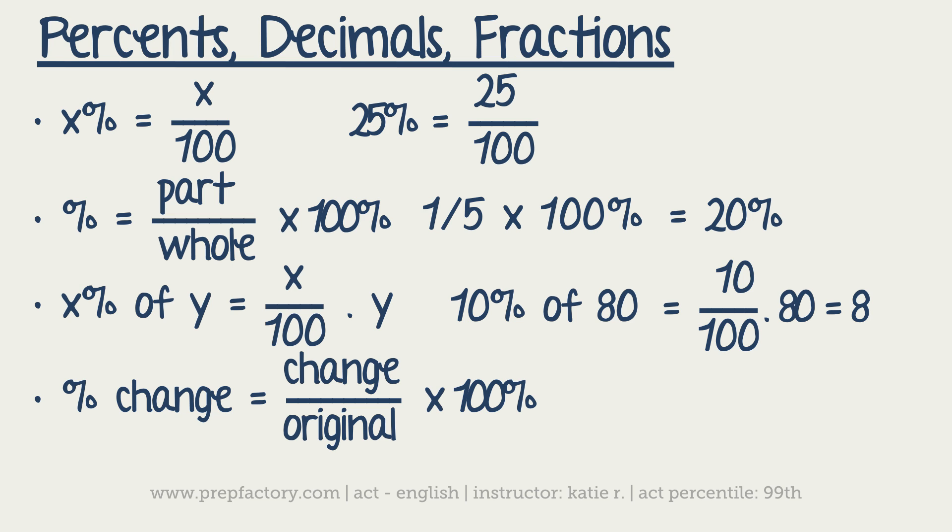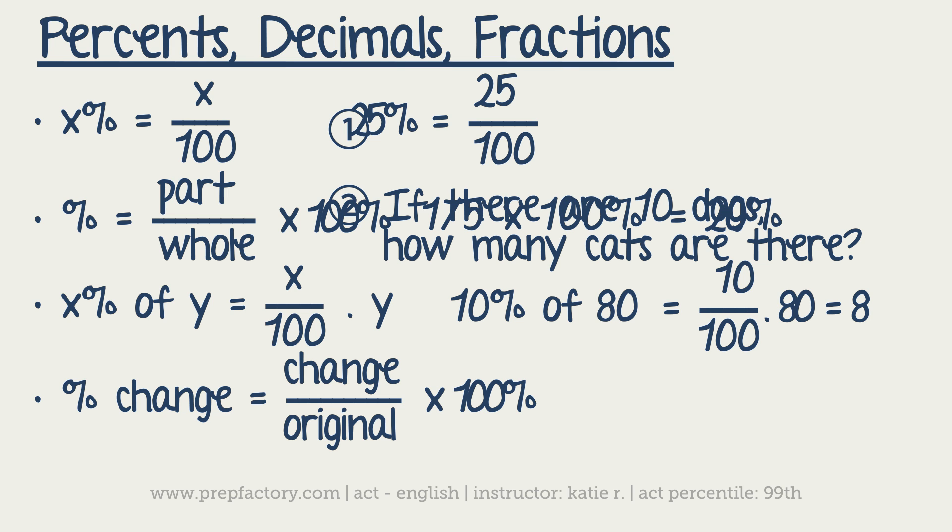And then the times 100%, again, anytime you see a times 100% in any of these kinds of formulas, it's just changing it from a fraction or decimal into a percentage. So make sure that you remember that because whenever they ask you to come up with an equation for a certain set of circumstances, the 100% has to be in there.